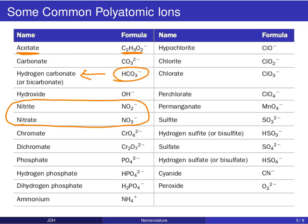This helps when you're trying to commit to memory the different patterns, such as sulfite and sulfate. There's a variety of these examples. I want you to be comfortable identifying these polyatomic ions when you see them in molecular formulas, and be very comfortable moving back and forth between a given polyatomic ion name and its associated chemical formula.